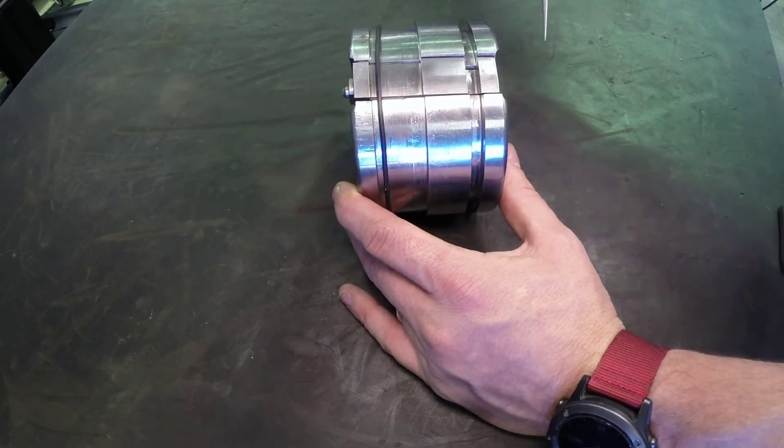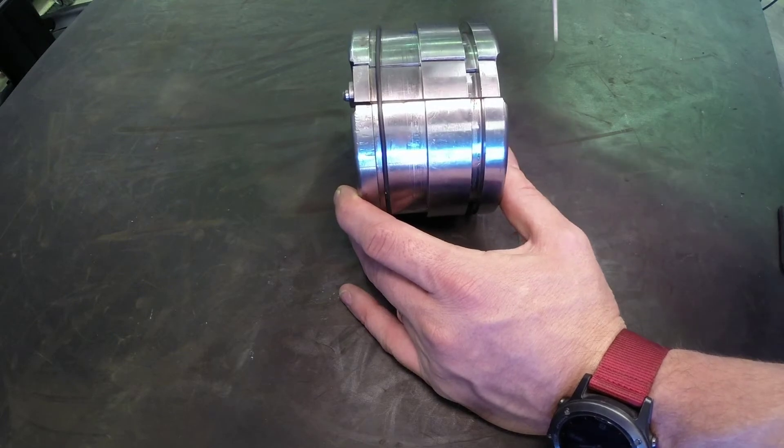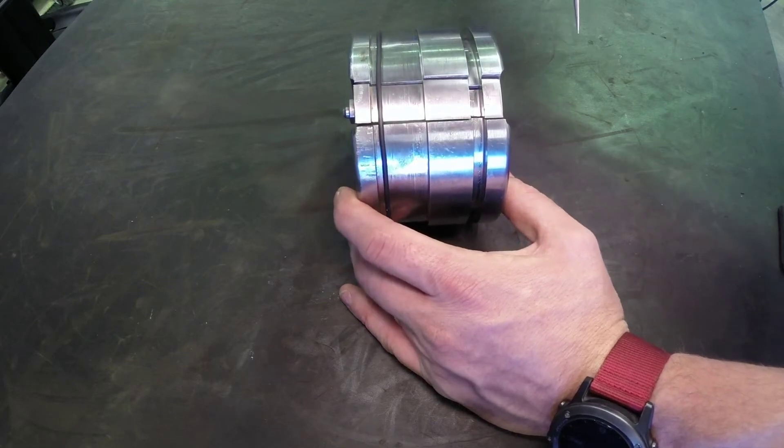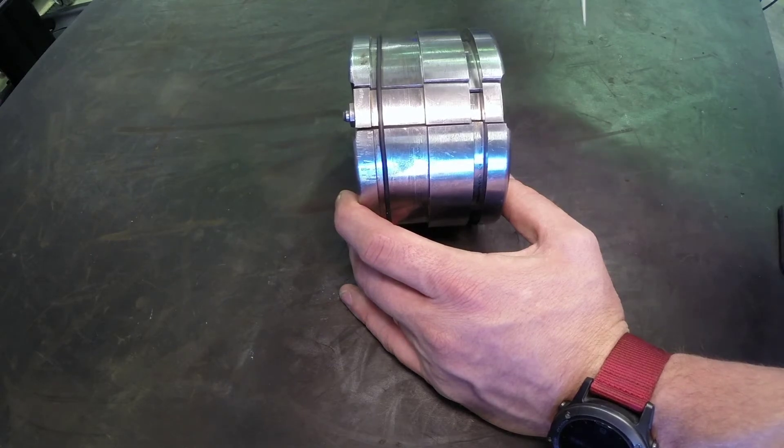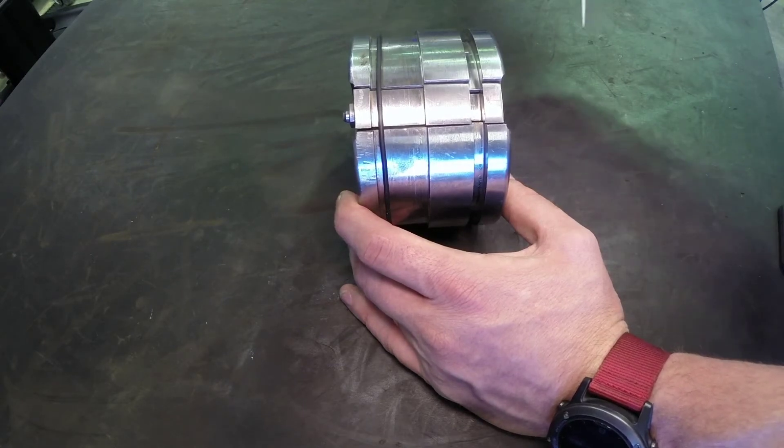Normally when a piston bottoms out in either direction, the pressure would continue to build until system pressure was reached and the relief valve would then open up.